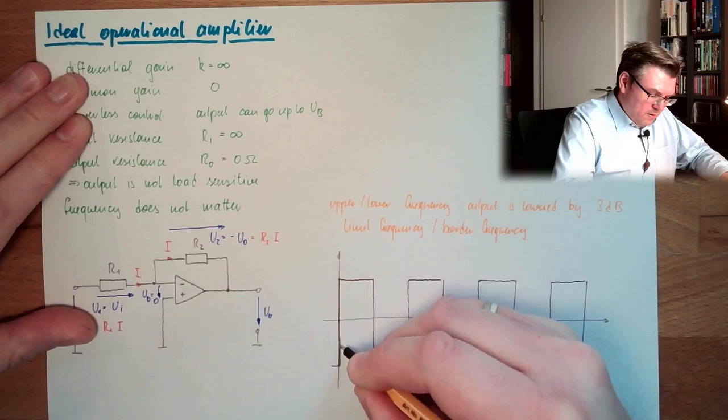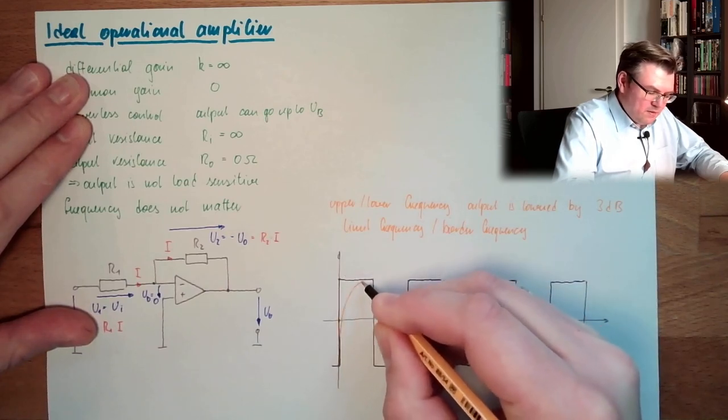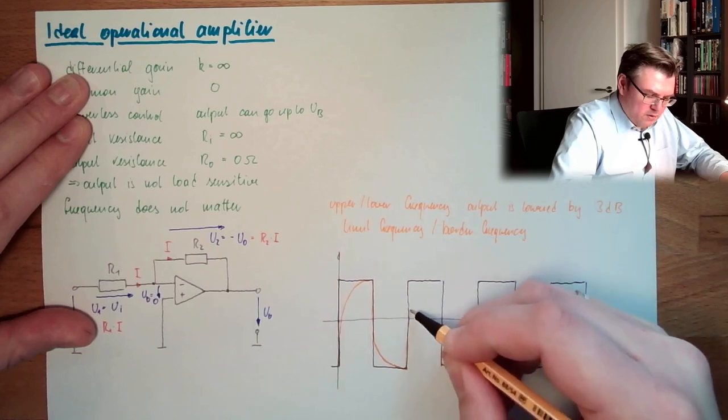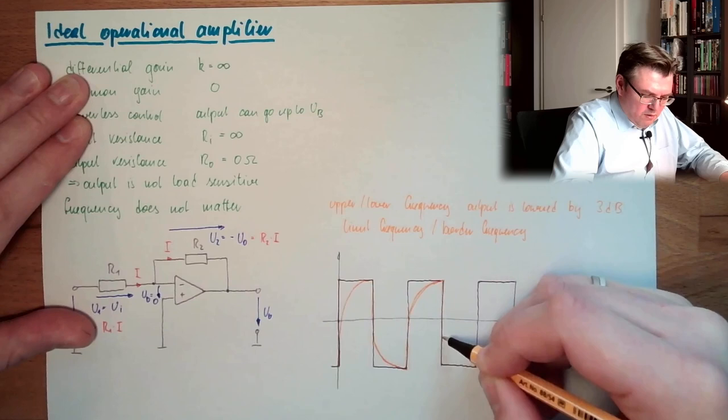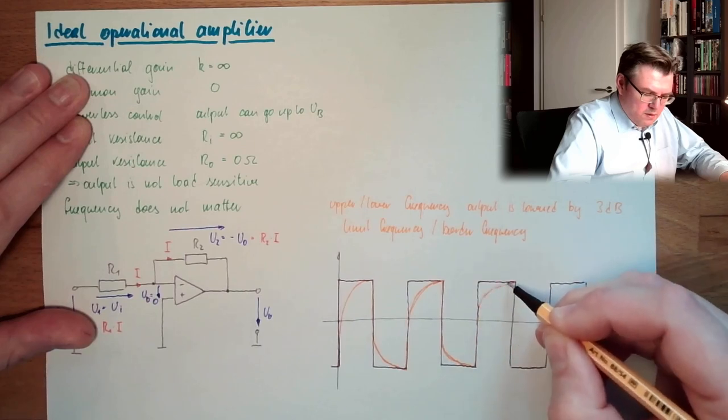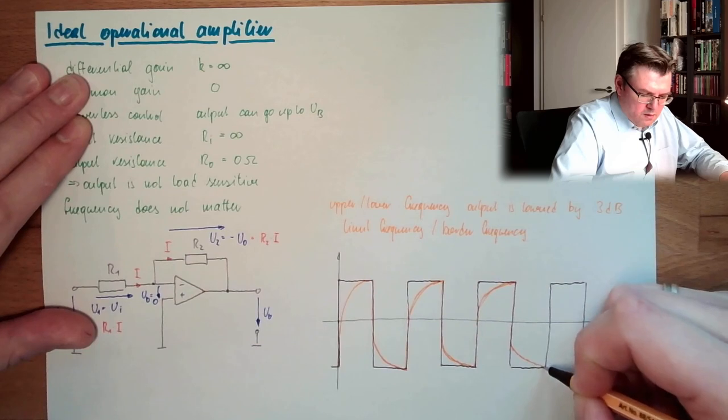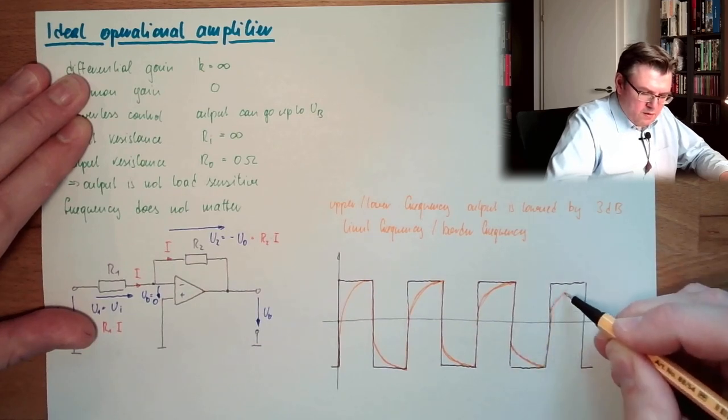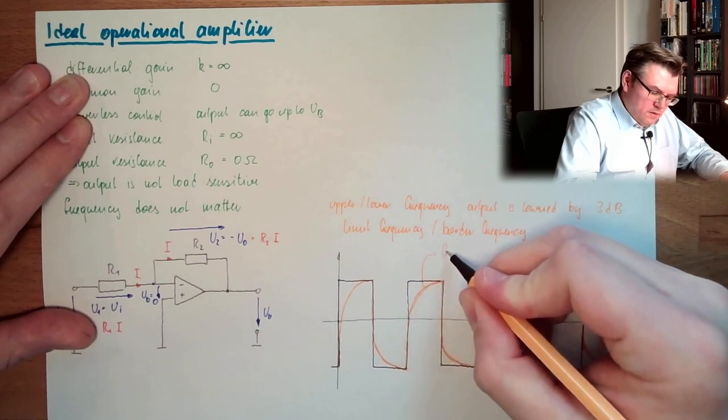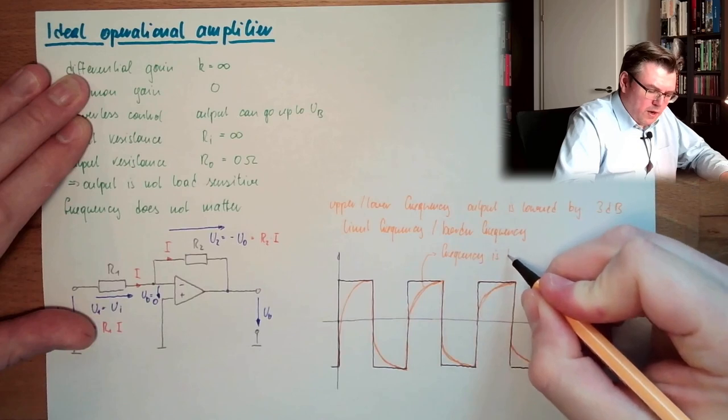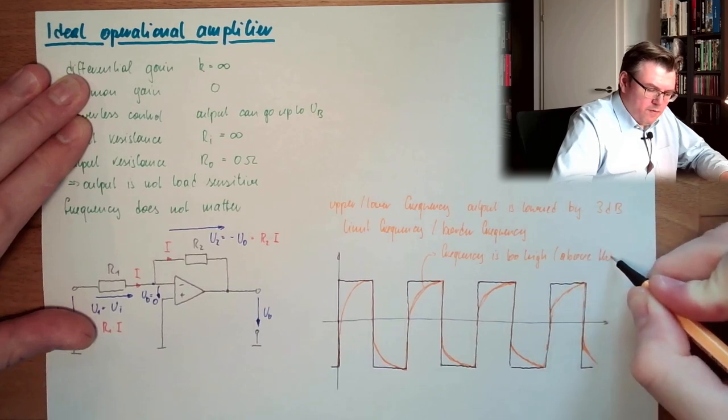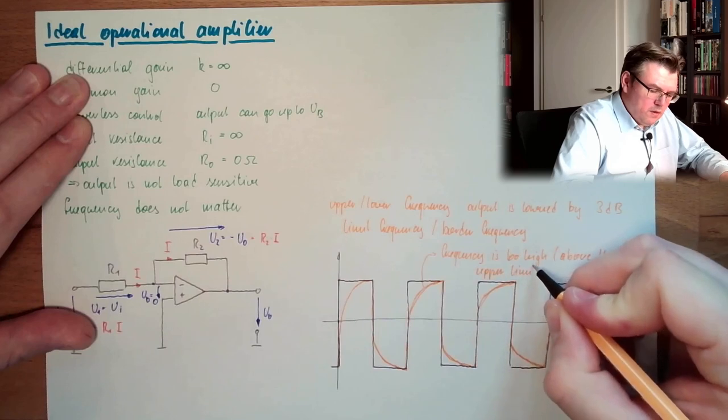Here, we will not, these deep things, we will not see. It would probably look like that. This is somehow rounded. If you see things like that happening, then this means frequency is too high. Above the upper limit.